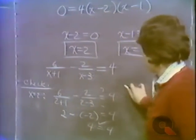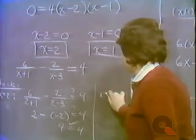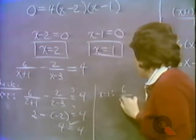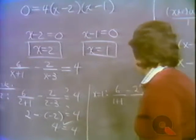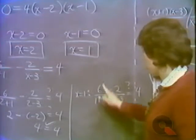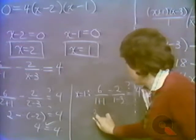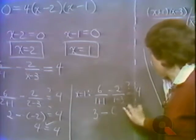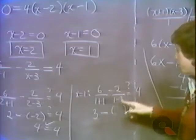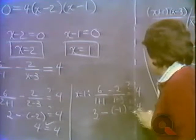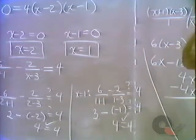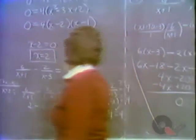Checking x equals 1: plugging into the original equation gives 6 over 2 minus 2 over minus 2, which is 3 minus minus 1, equals 4. It checks out. So we have solved this problem and both x equals 2 and x equals 1 are valid solutions.